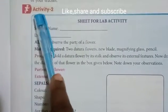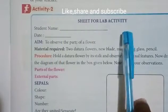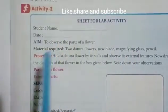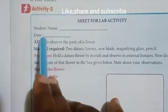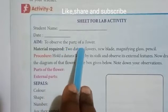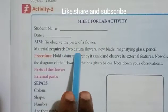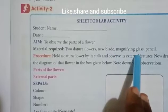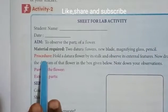Here is Activity 2 — a sheet for lab activity. We make a lab activity. Here we write student name and date. The aim is to observe the parts of a flower. Materials required: two datura flowers, a new blade, a magnifying glass, and a pencil. Procedure: hold a datura flower by its top and observe its external features.